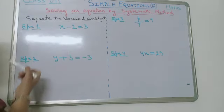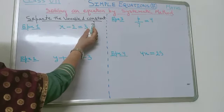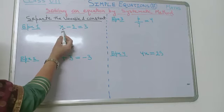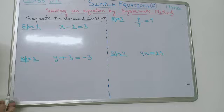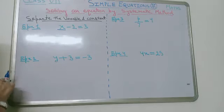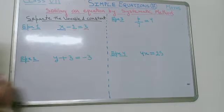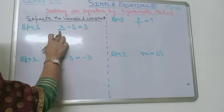To solve an equation, we have to separate the variable and constant. Let's consider an example. The first example is x minus 2 is equal to 3. Here, the term x is variable and 2 and 3 are constant. So we have to separate this 2 from x.